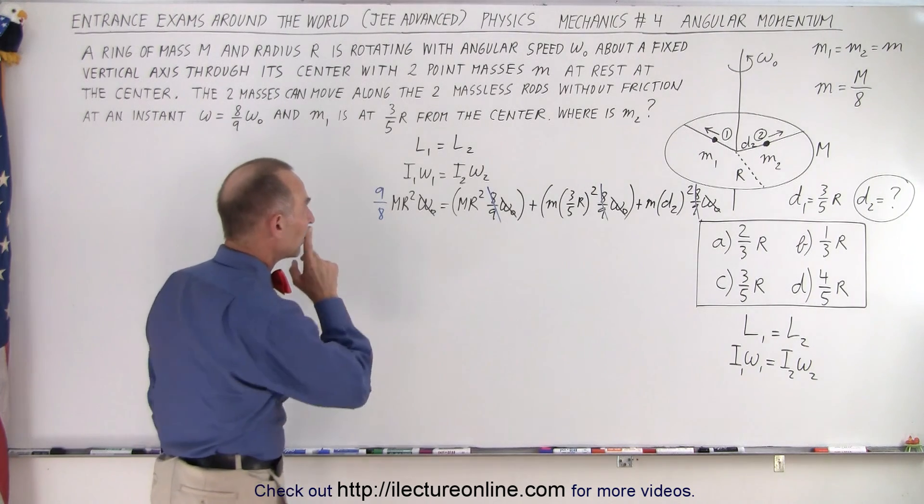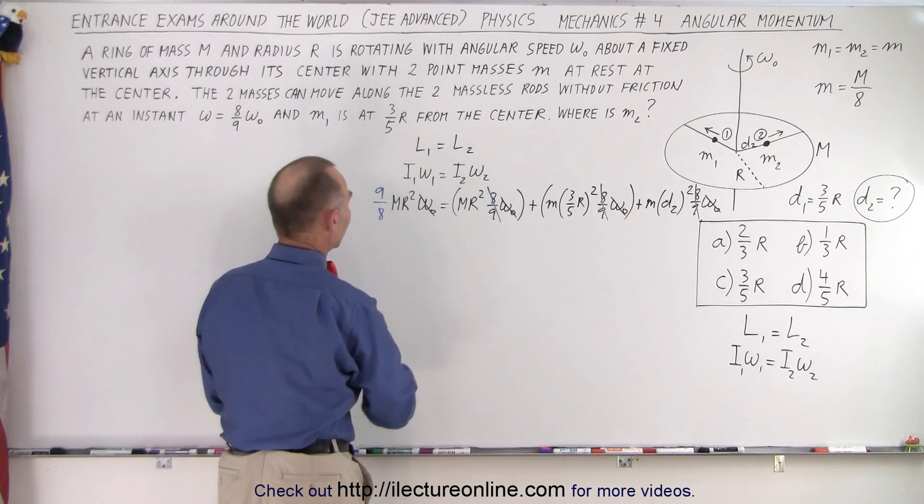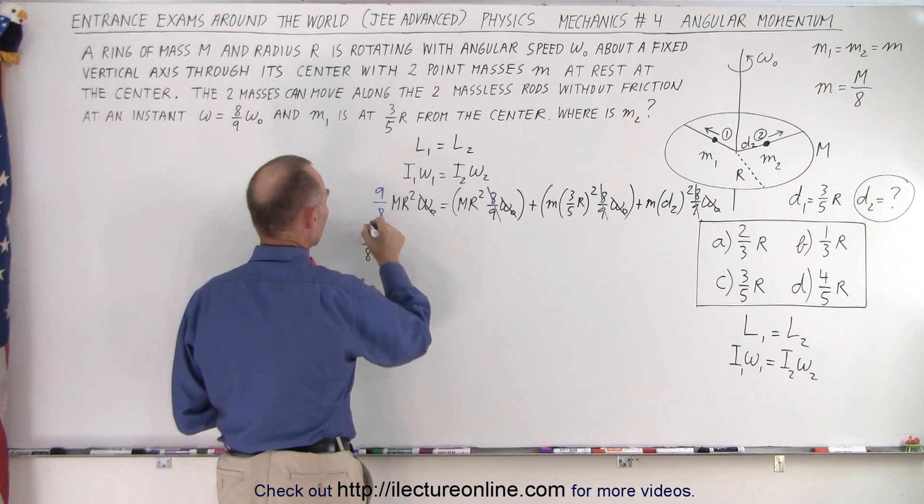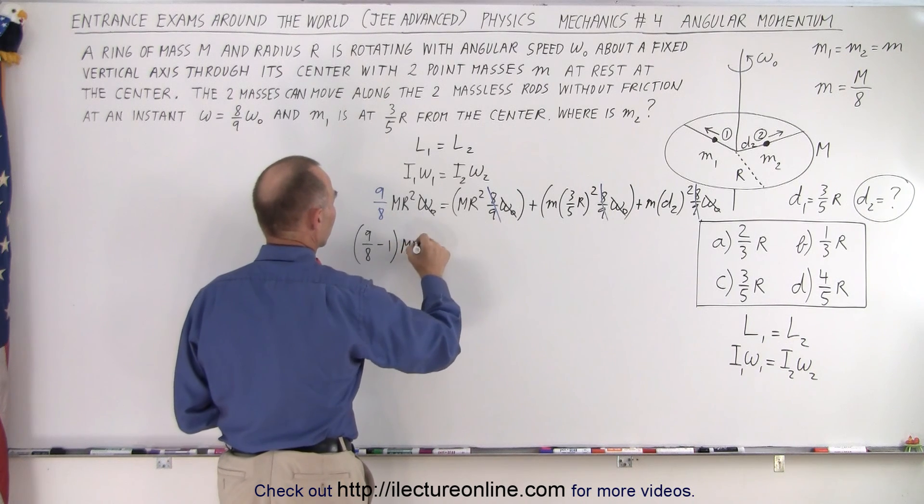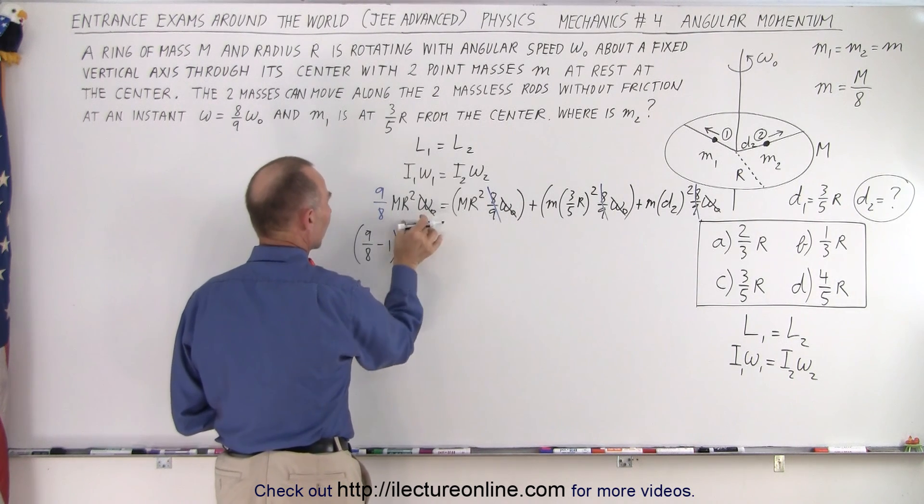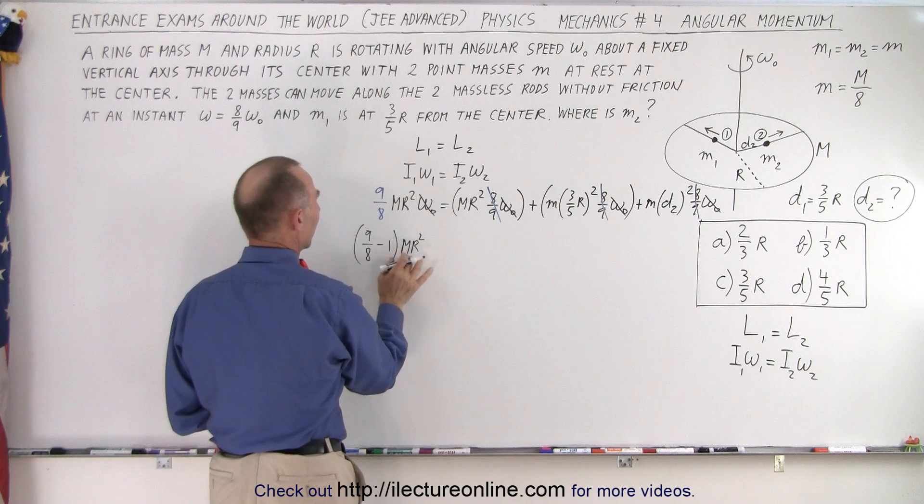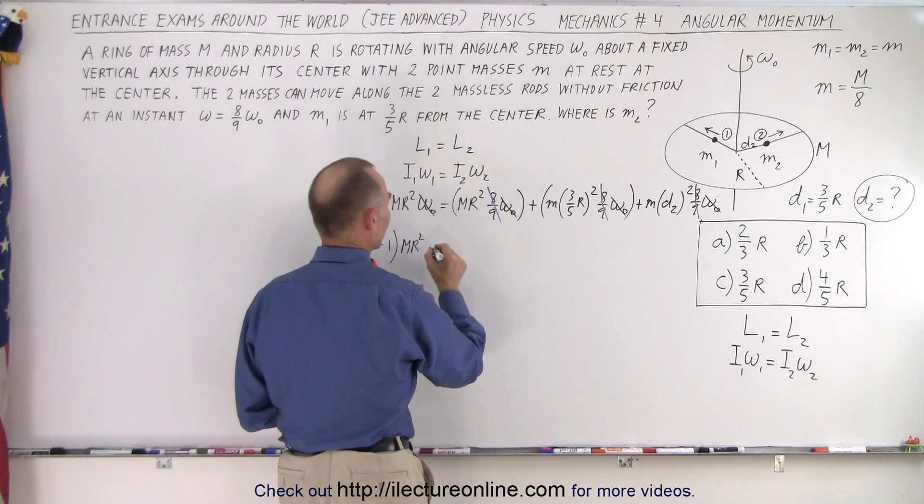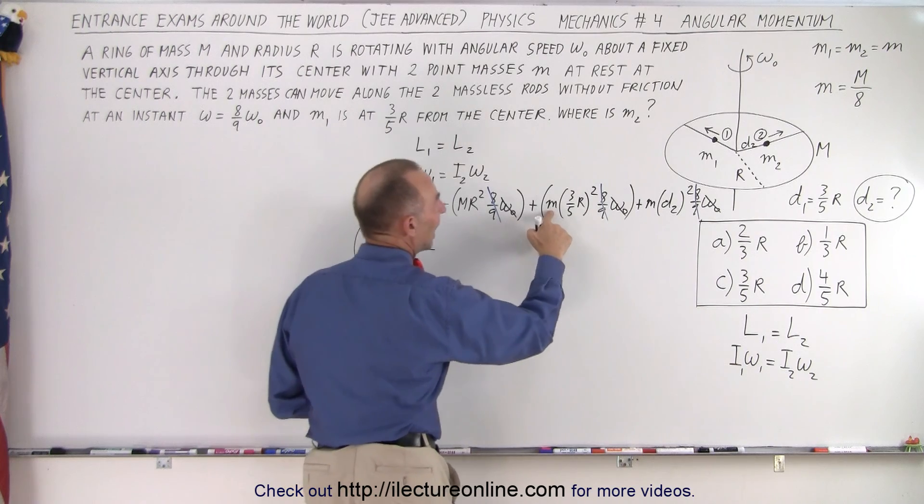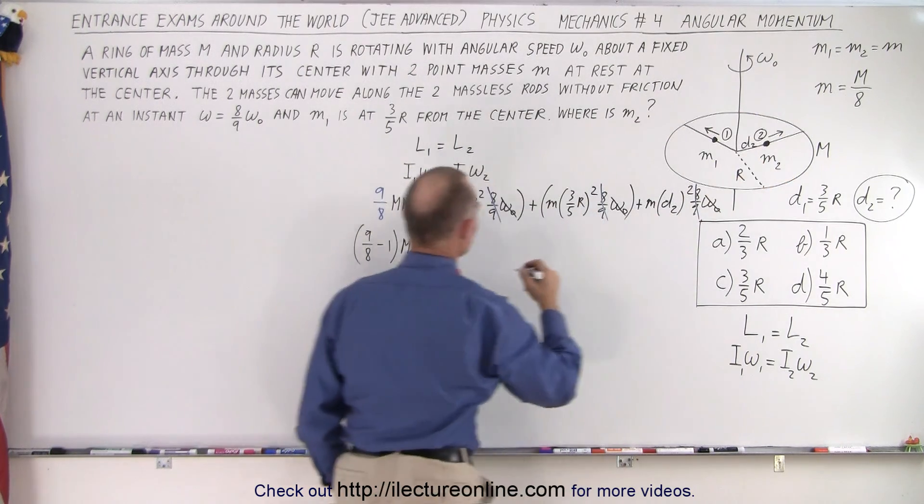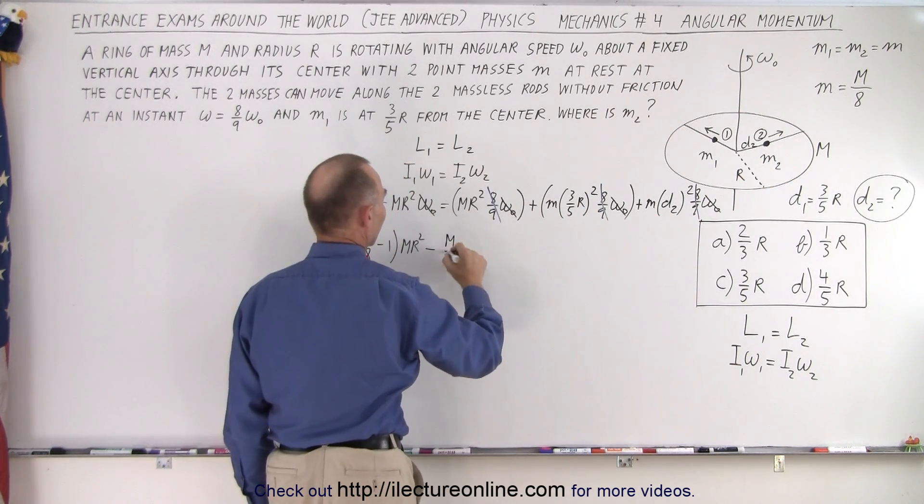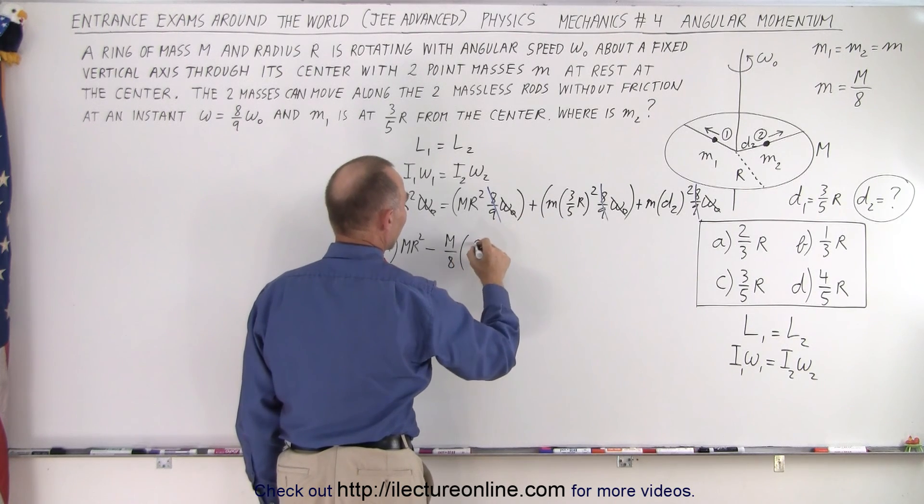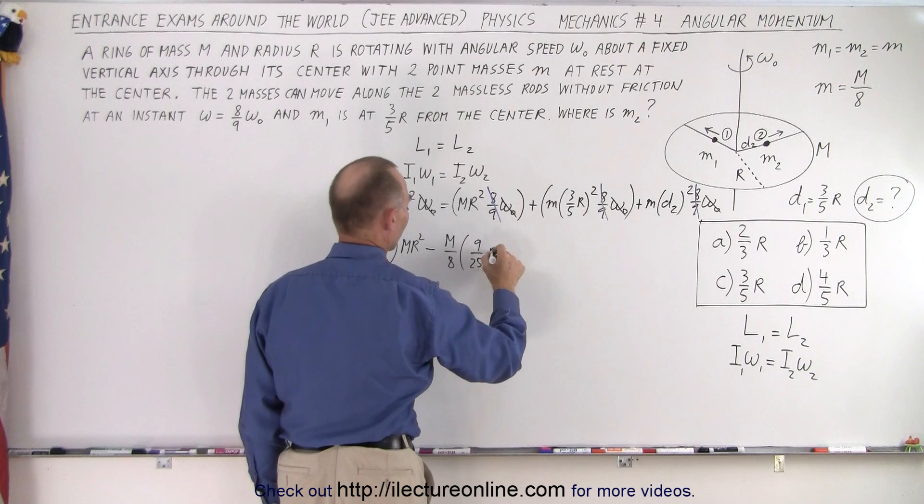And now what we want to do is move this over to this side. So now we have nine over eight minus one mr squared, because we're moving the mr squared to the left side. Move this to the left side, so it would be minus. Notice that m is m divided by eight, so I'm going to write m divided by eight instead of little m.